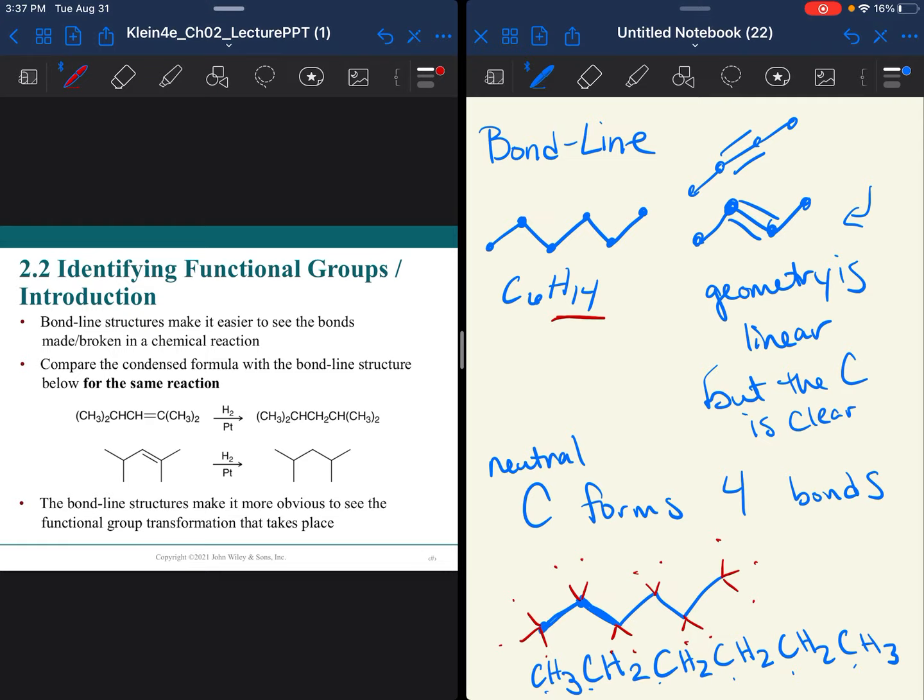The bond line structure makes it easier to identify functional groups, which we will spend a significant part of this semester and really the whole year of organic chemistry studying the properties and reactivities of different functional groups. You can see how much more clear the reaction is here of a double bond with hydrogen when we have bond line structure, because it's very clear we had a double bond and now the double bond is gone. Whereas when you're dealing with the condensed structure, it doesn't really jump out at you in quite the same way. We like to use bond line structure for ease of communication, to simplify things, but also to make functional groups stand out.